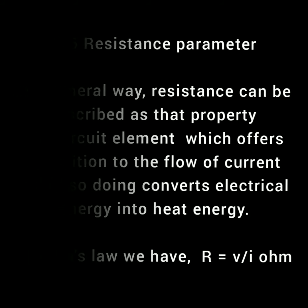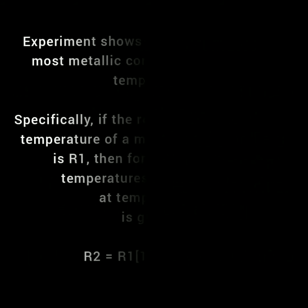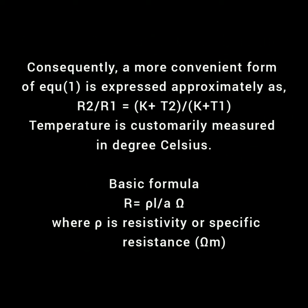By Ohm's law, R = V/I ohms. Experiment shows that the resistance of most metallic conductors varies with temperature. Specifically, if the resistance of a metal at temperature T1 is R1, then for a normal range of temperatures, the resistance at temperature T2 is given by R2 = R1 × (1 + α1 × (T2 − T1)), where α1 is the temperature coefficient of resistance at T1 and temperature is customarily measured in degrees. Consequently, a more convenient form is R2/R1 = (K + T2)/(K + T1).